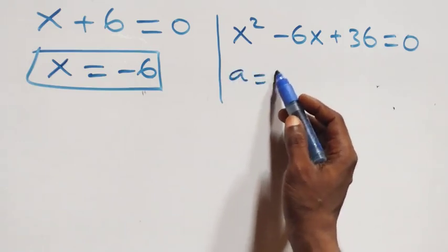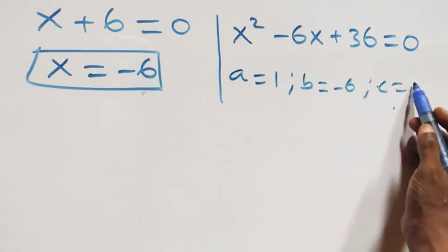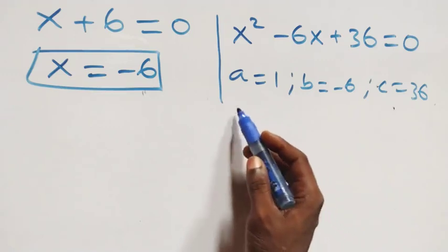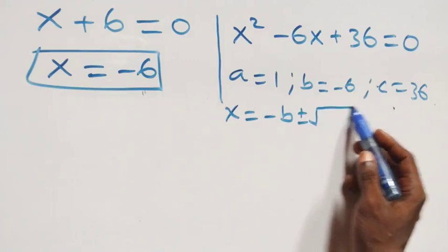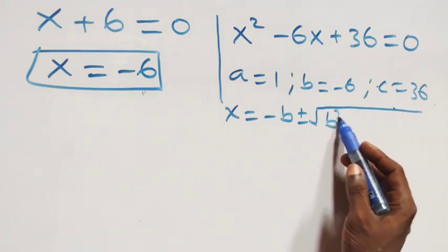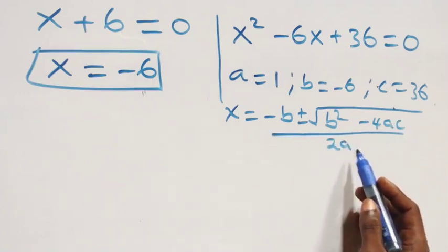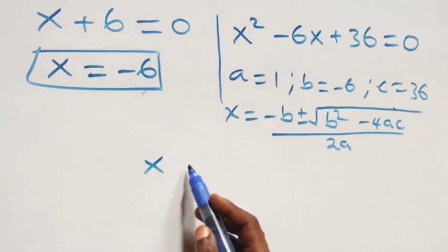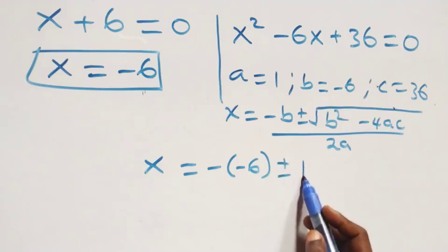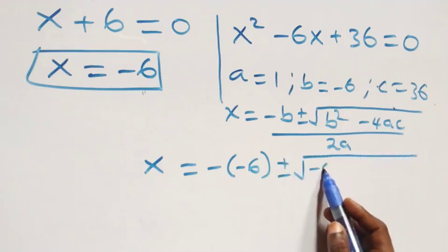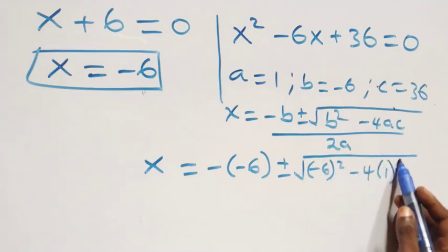For the quadratic x^2 - 6x + 36 = 0, we identify a = 1, b = -6, and c = 36. Applying the quadratic formula x = (-b ± √(b^2 - 4ac)) / 2a, we substitute: x = (6 ± √(36 - 4 × 1 × 36)) / 2.